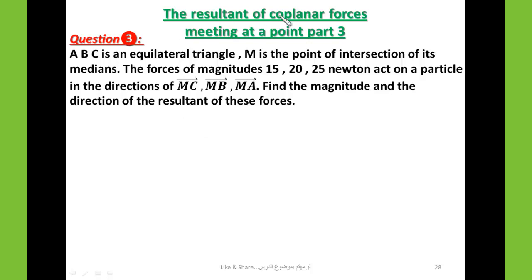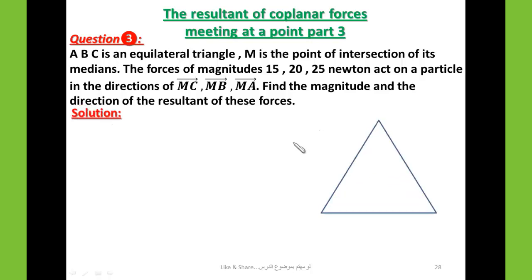The resultant of coplanar forces meeting at a point, part 3. Question 3. ABC is an equilateral triangle, meaning all sides are equal and all angles are equal, each equal to 60 degrees.